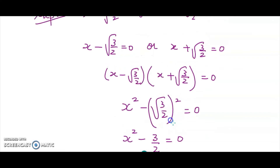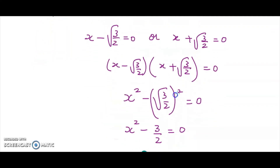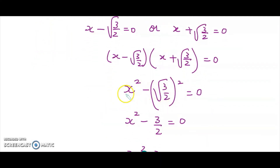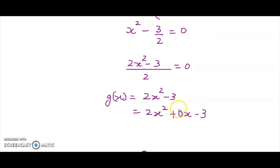Again, the roots are square root 3 by 2 and negative square root 3 by 2. Taking them to the other side gives x minus square root 3 by 2 and x plus square root 3 by 2. Multiplying the two factors gives a minus b times a plus b, so applying a squared minus b squared: x squared minus root 3 by 2 whole squared, which opens as x squared minus 3 by 2. Taking LCM 2 gives 2x squared minus 3 divided by 2 equals 0, so our divisor g(x) is 2x squared minus 3, rewritten as 2x squared plus 0x minus 3. Step 2 and step 3 are left for you to finish.